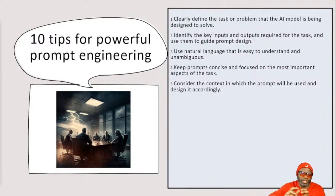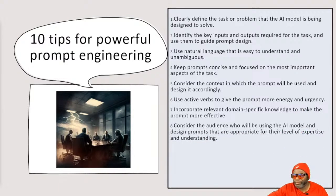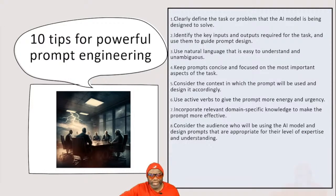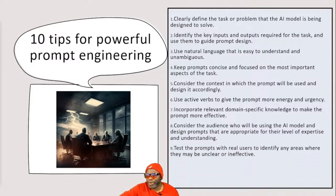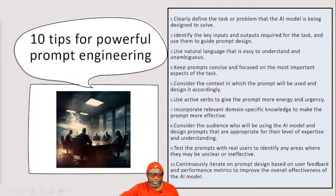Keep the prompts concise and focused on the most important aspects - that's why the RGB Role-Goal-Benefit format works wonderfully. Consider the context in which the prompt will be used and design it accordingly. Use active verbs to give the prompt more energy and urgency. Incorporate relevant domain-specific knowledge to make the prompt more effective. Consider the audience - it's a big one. There are times you actually have to tell the AI tool who the audience is and to stay focused on them. Test the prompts with real users to identify areas where they may be unclear or ineffective. And lastly, continuously iterate on prompt design based on user feedback and performance metrics to improve the overall effectiveness of the AI model.